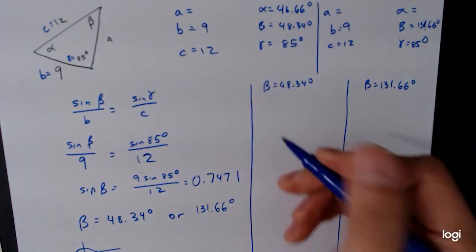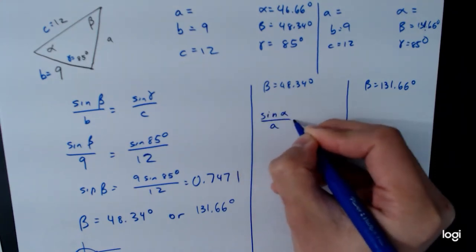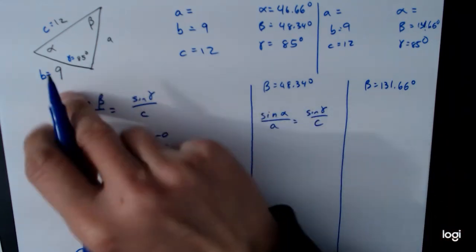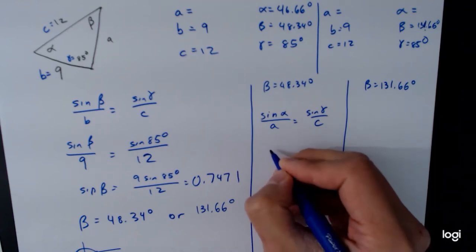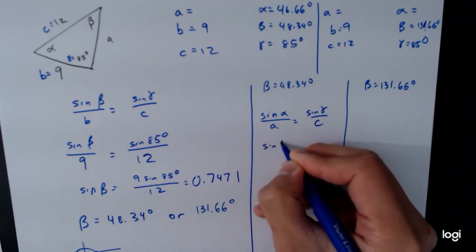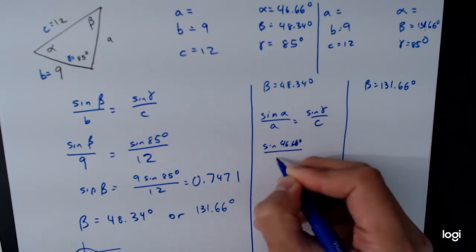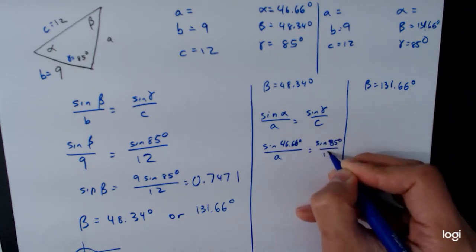And from here, we can now set up our law of sines. Sine of alpha over A is equal to, let's use sine of gamma over C. Again, our two given values were the C and the gamma here. So we have sine of 46.66 degrees over A is equal to sine of 85 degrees over 12.